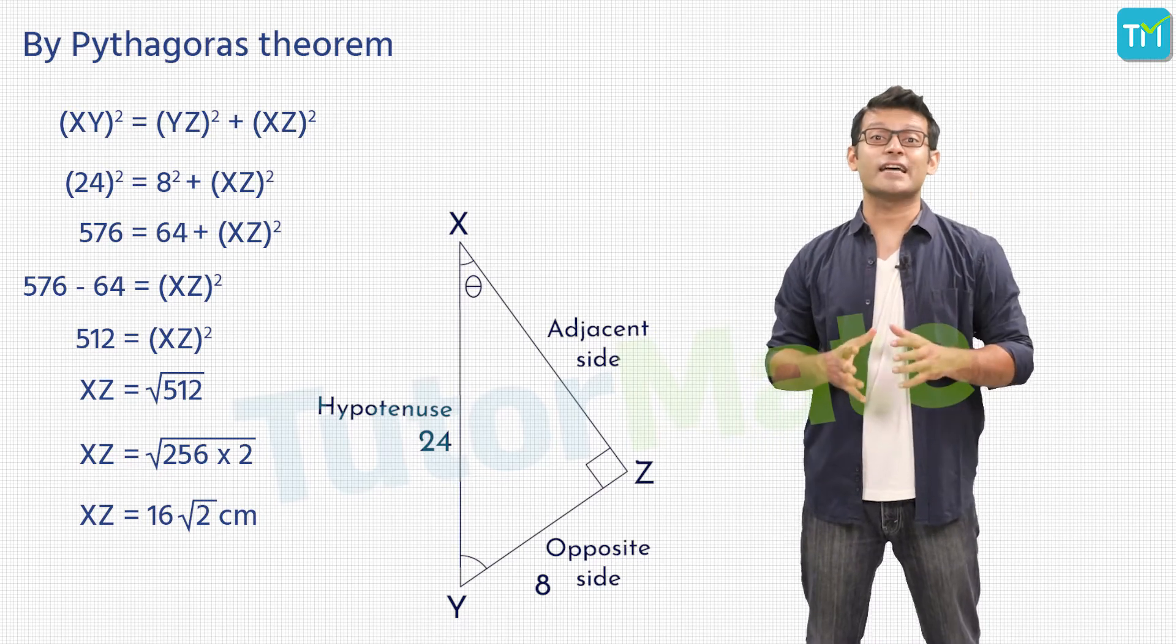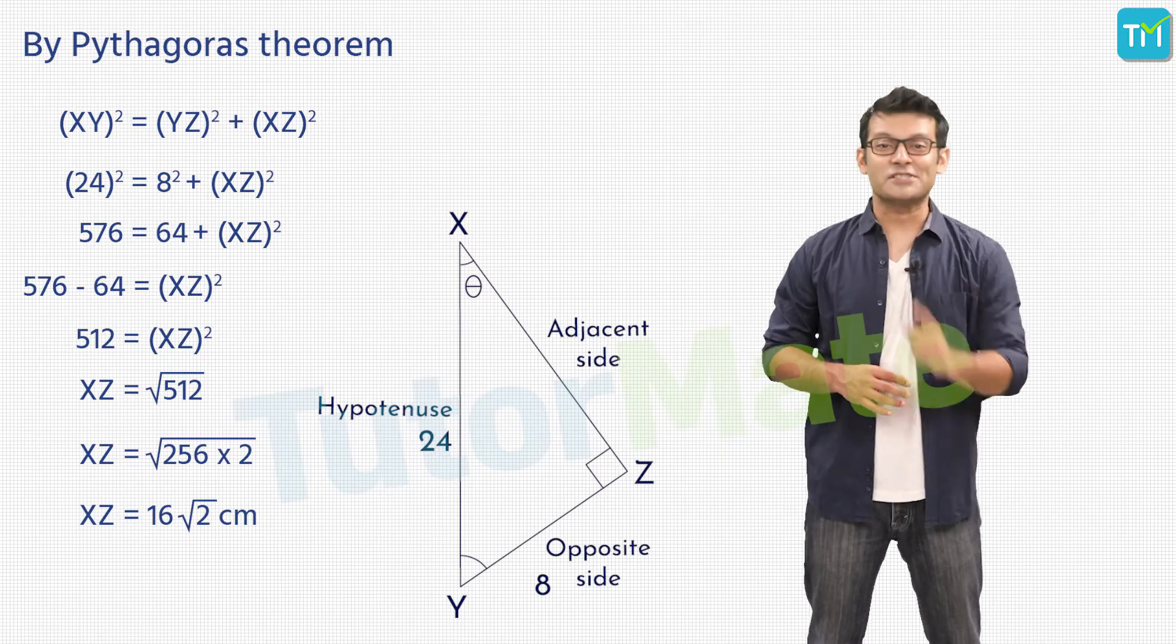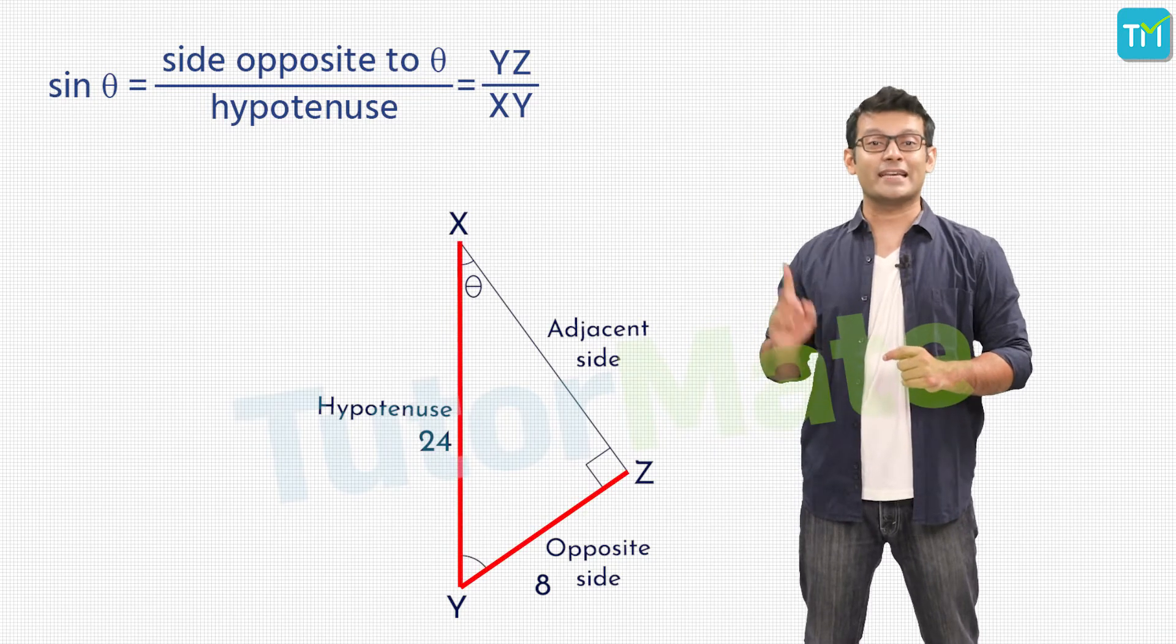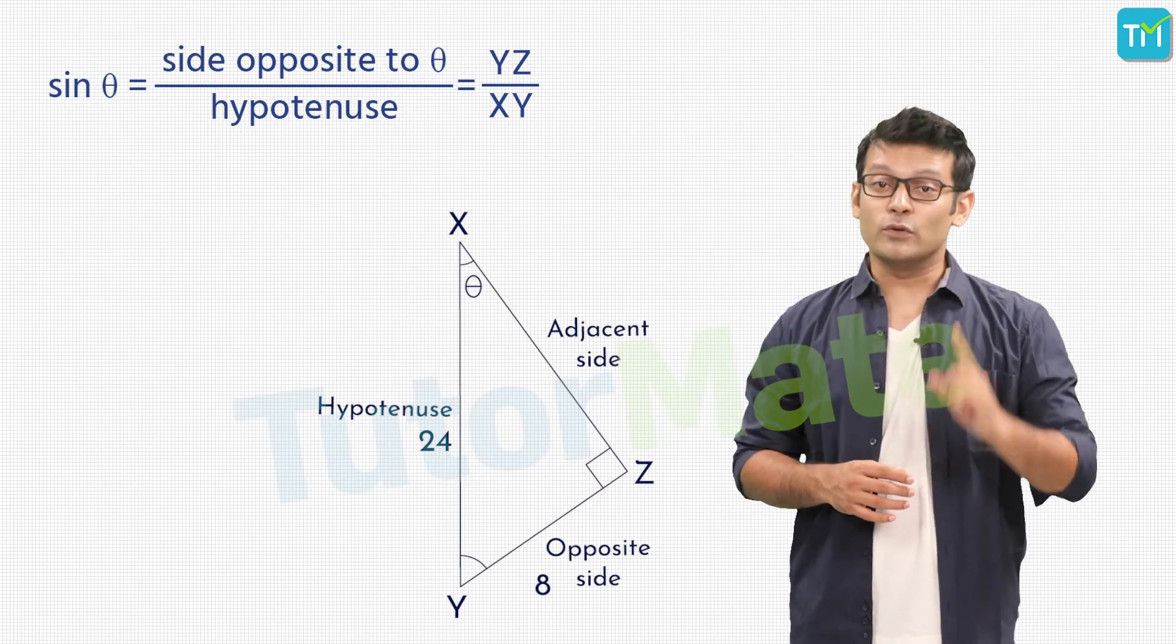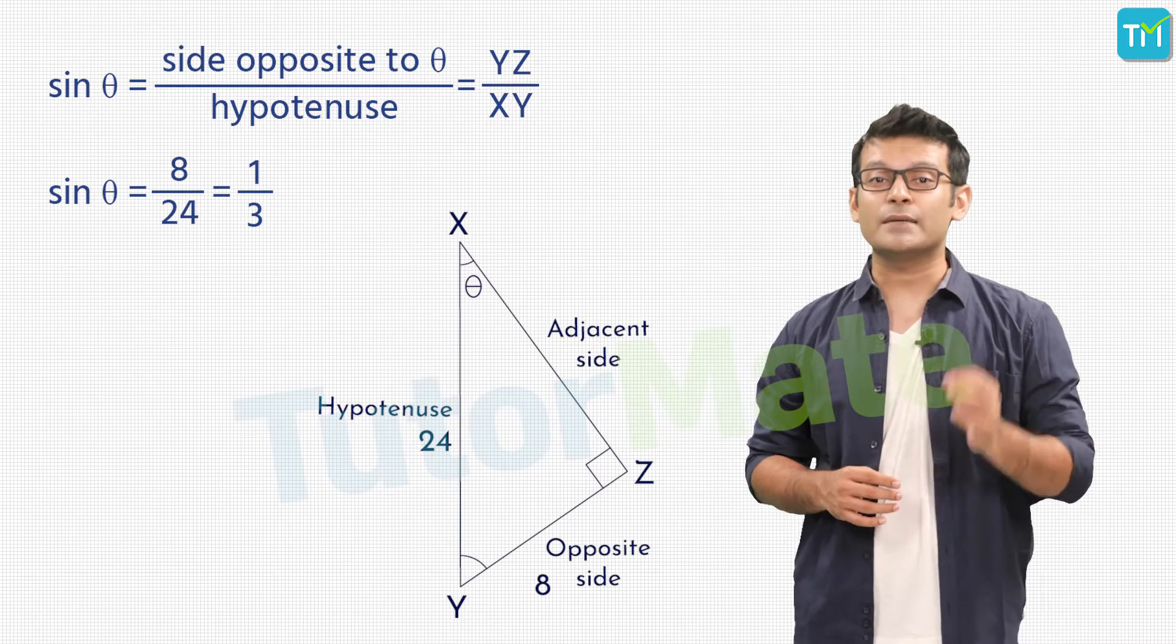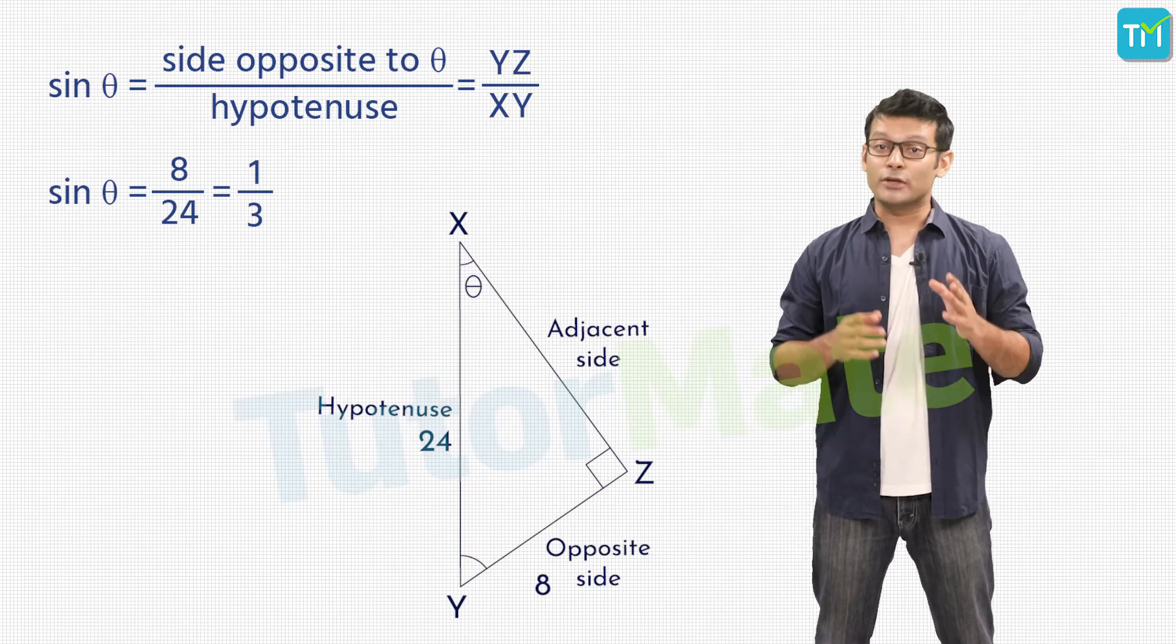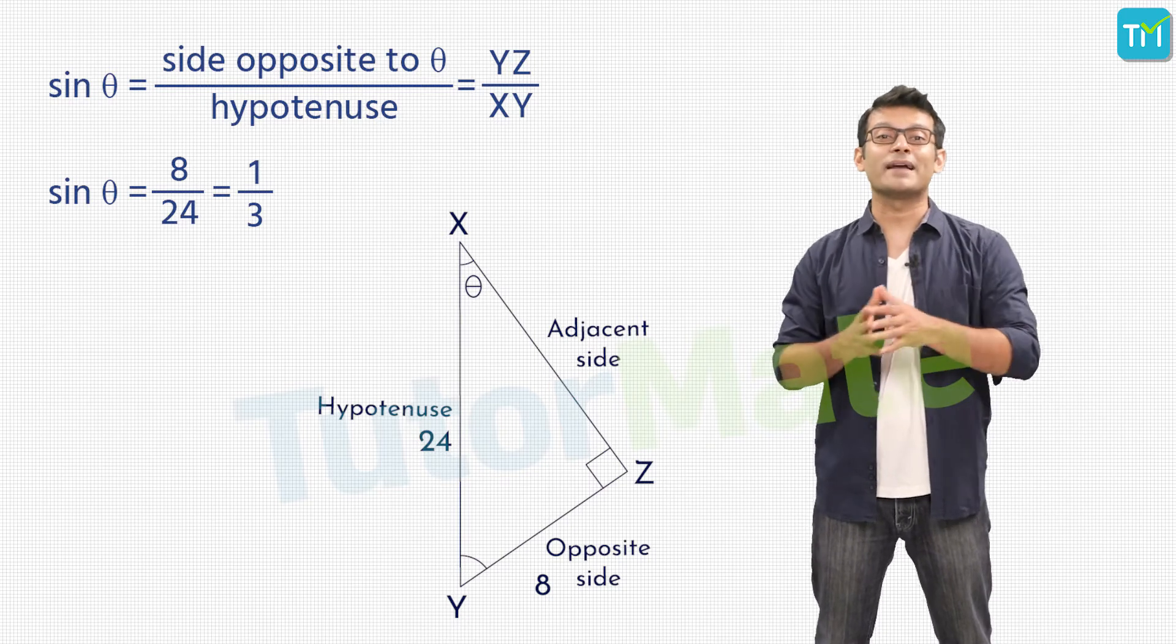And now that we know all three sides of XYZ, we can find all the trigonometric ratios. Starting with sine, we have the sine ratio of θ as opposite side upon hypotenuse, which will be YZ by XY. Here, we know that YZ is 8 units and hypotenuse is XY which is 24 units. Therefore, we will get sin θ = 8/24. Cancelling 8 and 24, we will have 1 in the numerator and 3 in the denominator, because 24 is 8 × 3, and so sin θ = 1/3.